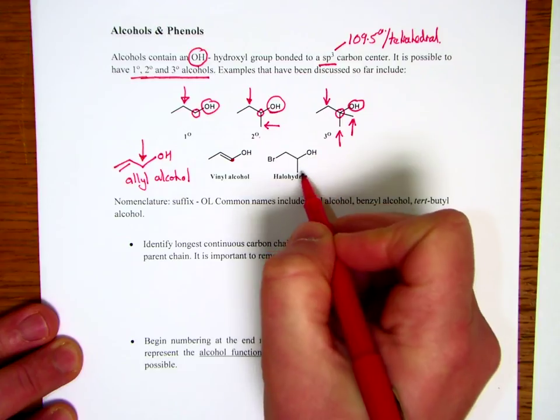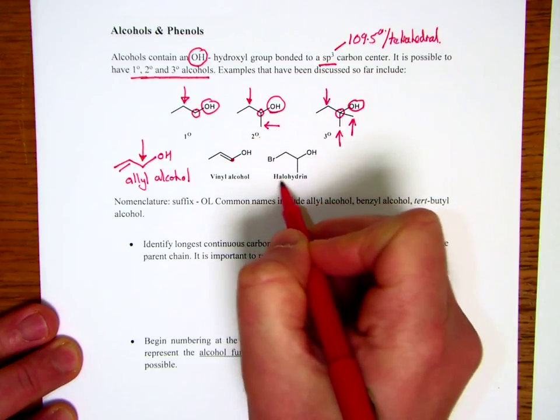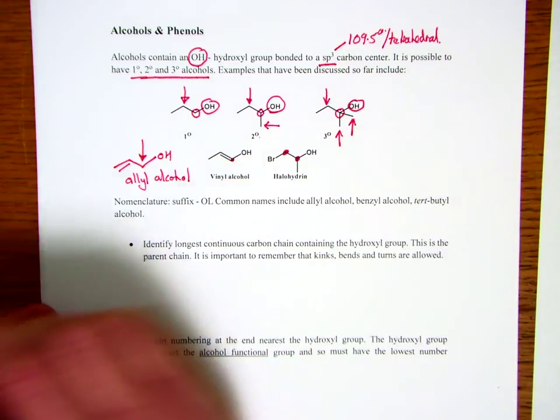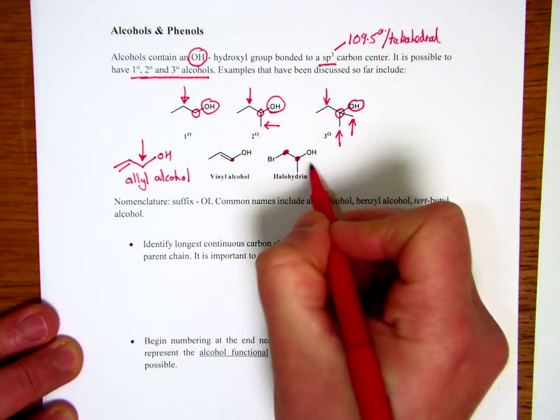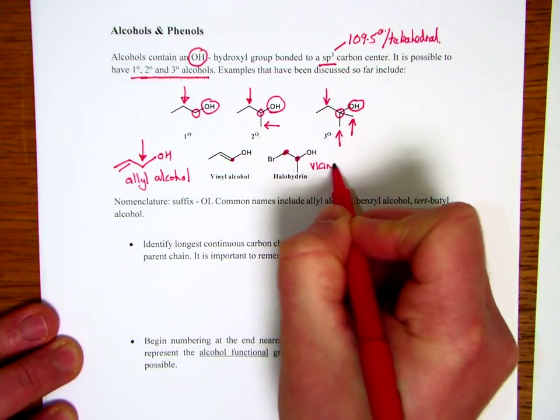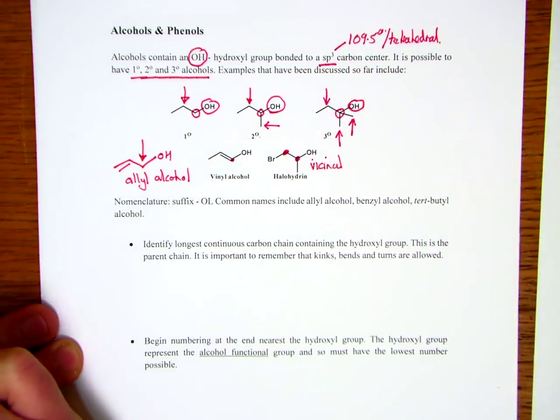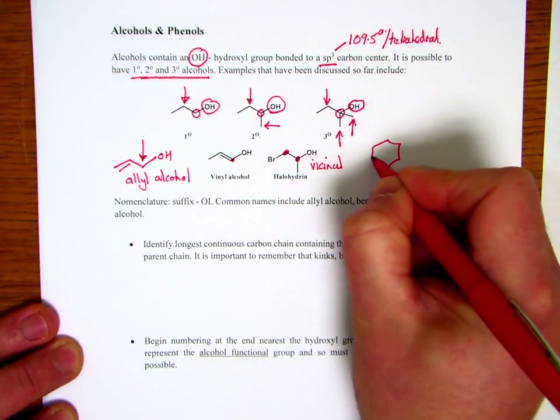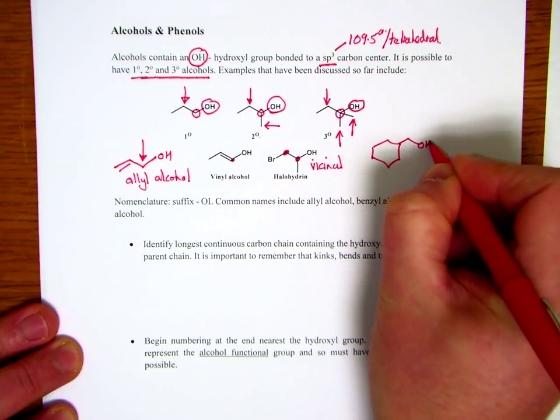In addition, we've seen some rather different types of alcohols, such as this halohydrin, in which the hydroxyl group and the bromo are on consecutive carbons. They are said to be in a vicinal relationship. And also, if we look at our benzyl alcohol.